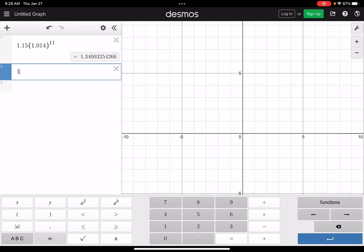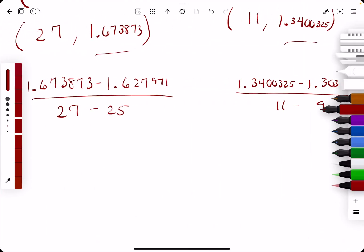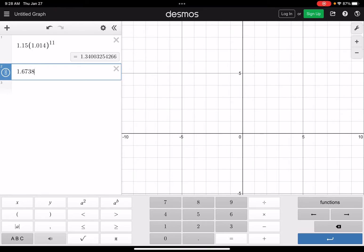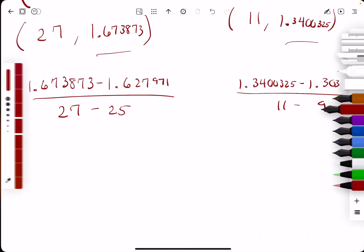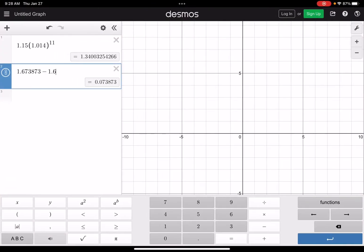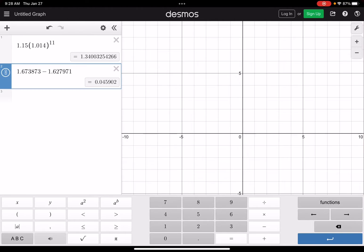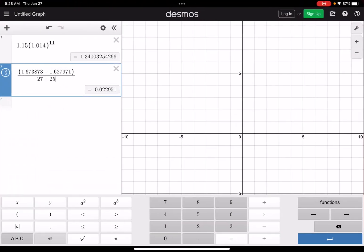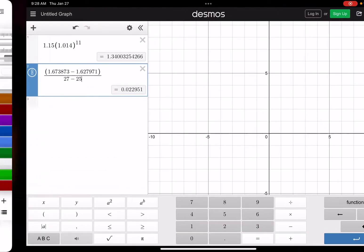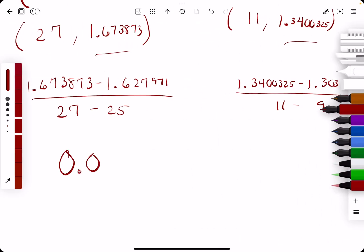We'll go ahead and calculate each of them now. So 1.673873 minus 1.627971, and we'll divide that by 27 minus 25. 0.022951. Is that right? Yeah.